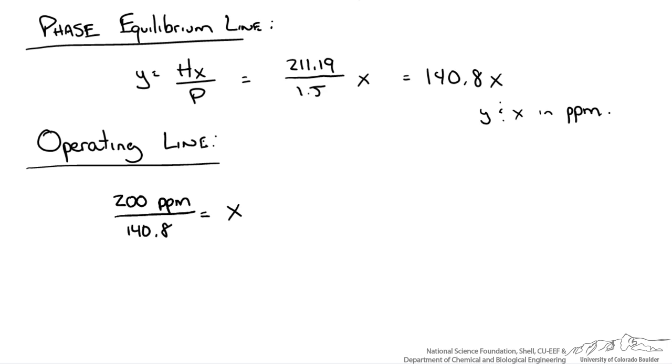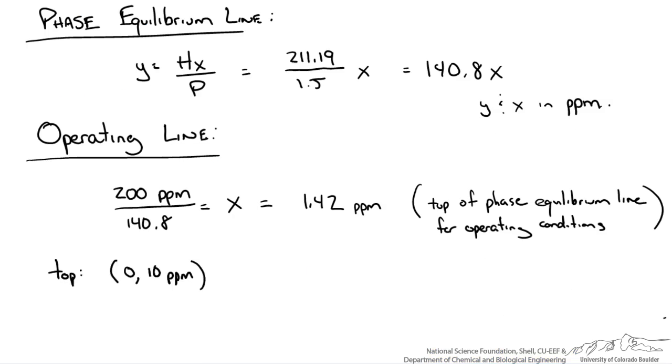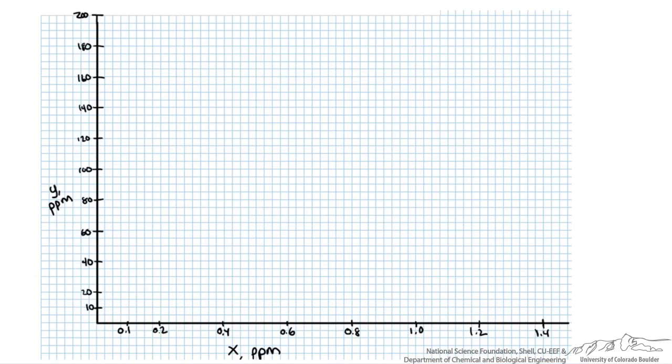Based on our column we know exactly what one of the points on our operating line will be. We have x0 equals 0, and we have y1 is equal to 10 parts per million. So the top of our column, or the bottom of our operating line, will go through that point. So here we have a plot that we can start working with. Obviously you can see that the y and x axes are not equal. We do know that the equilibrium line at 200 parts per million for y will be 1.42 for x. So that puts us right about here, and we know it goes through the origin. So this is our phase equilibrium line.